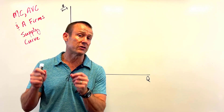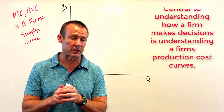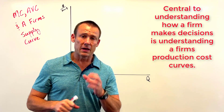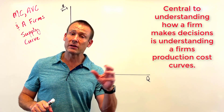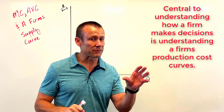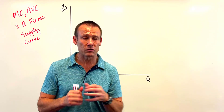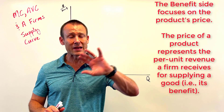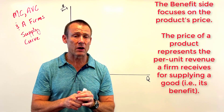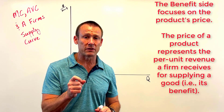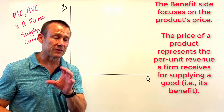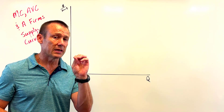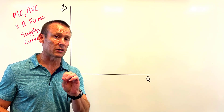At the beginning you're focused on the firm's different costs. Later on you'll get into the benefit side, but to do that deeply you need to understand that firms operate in different market structures — that's coming later. Right now we're focused on average variable costs, marginal costs, and how those two cost curves relate to supply.